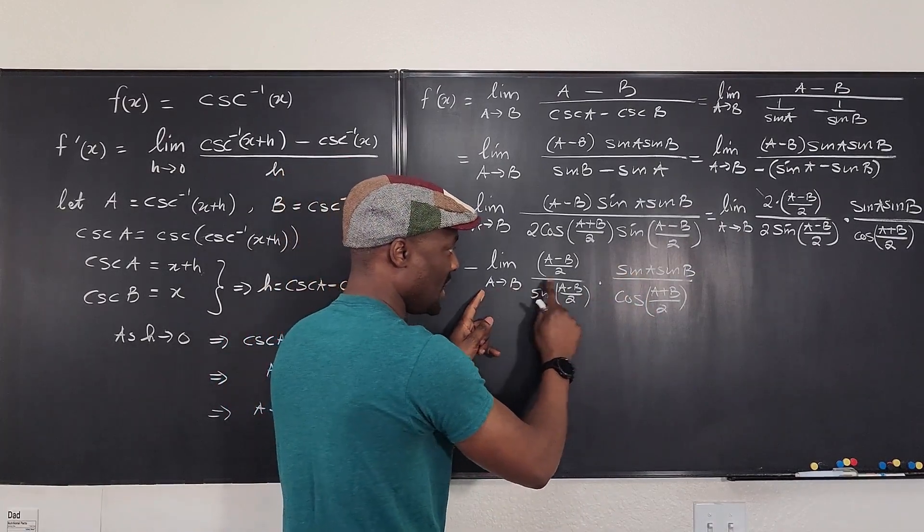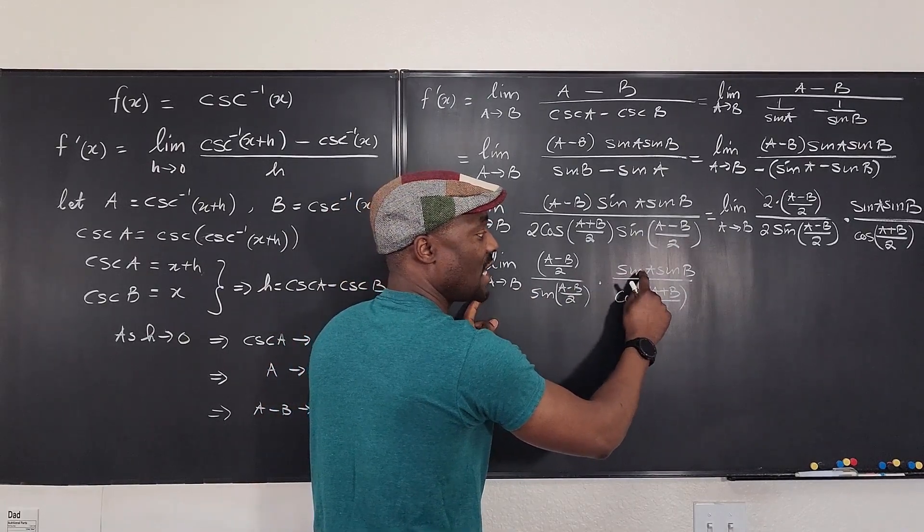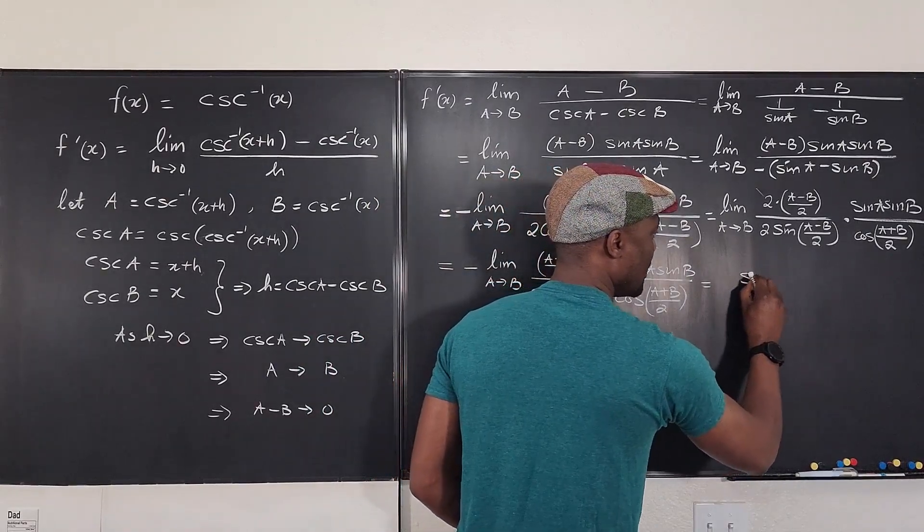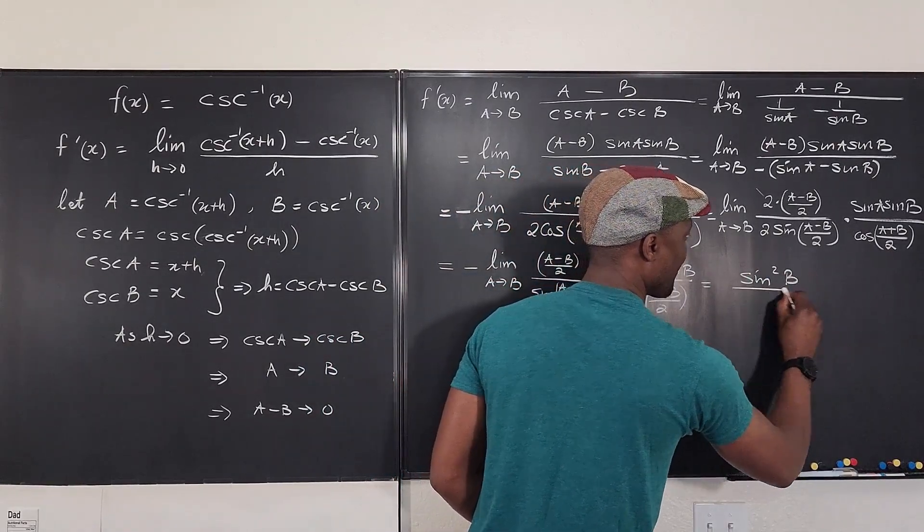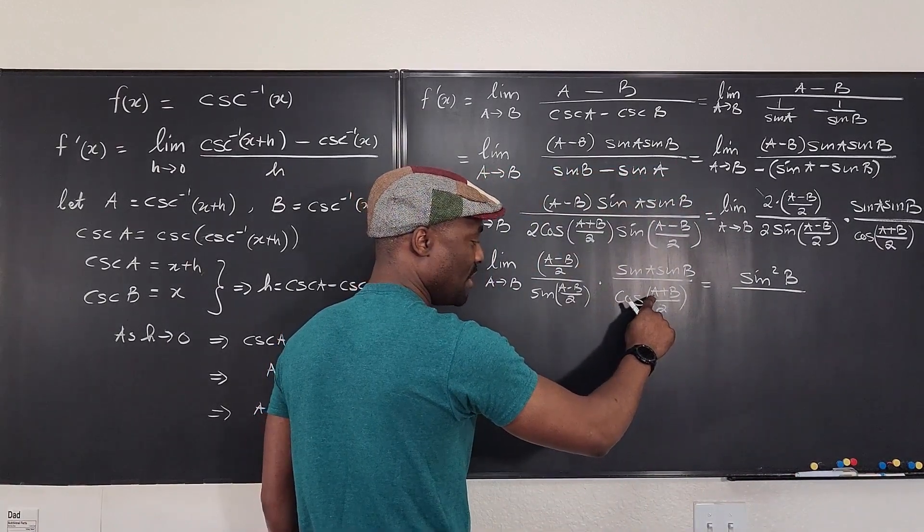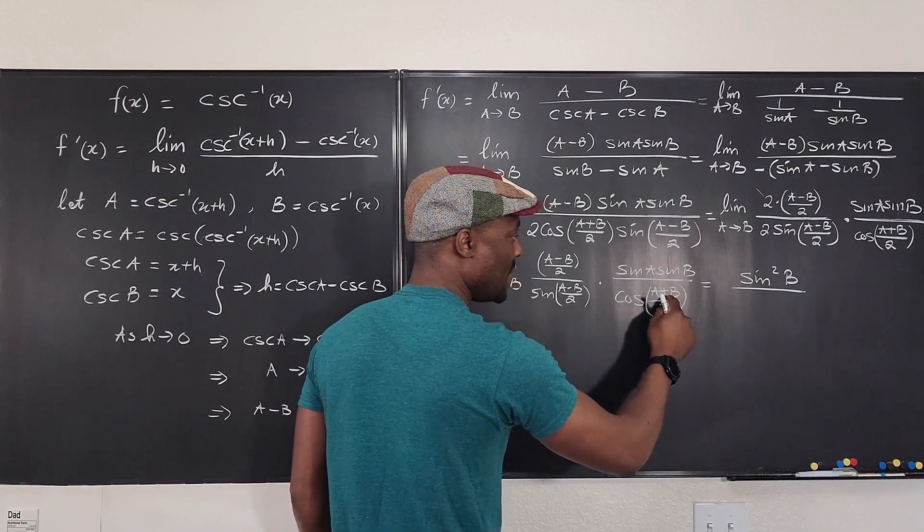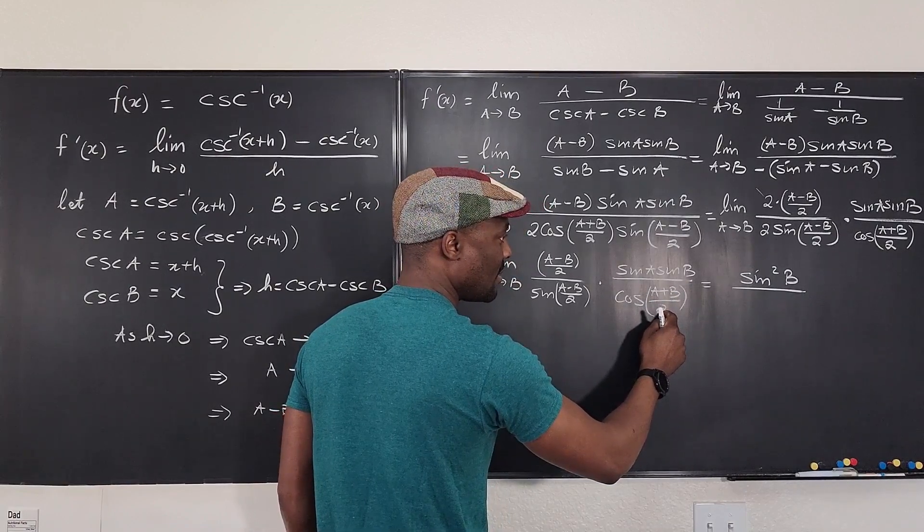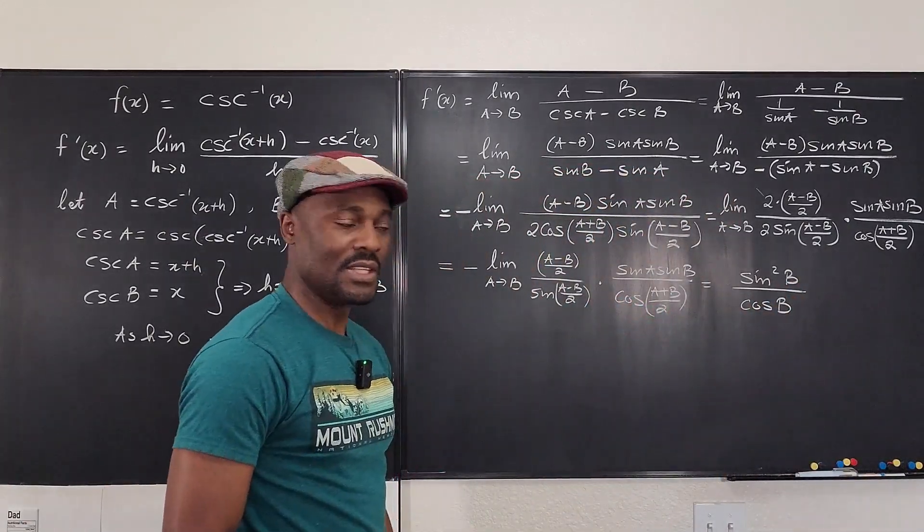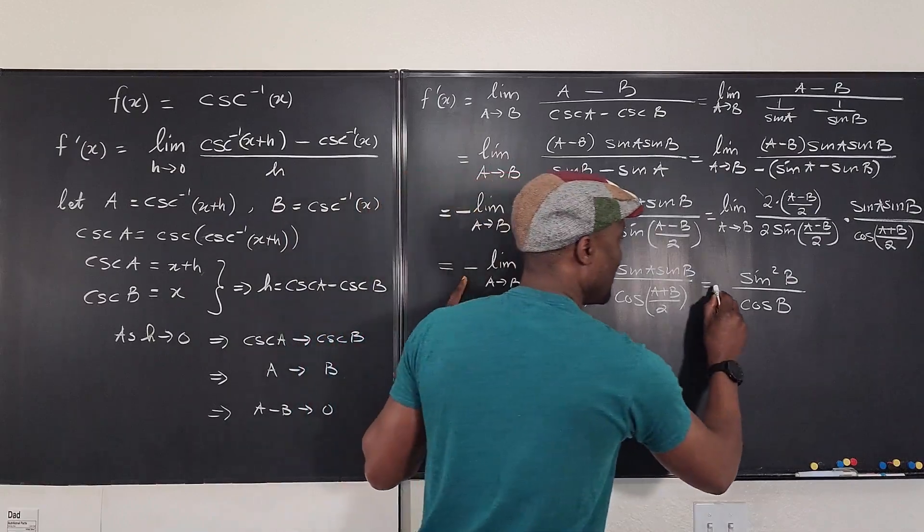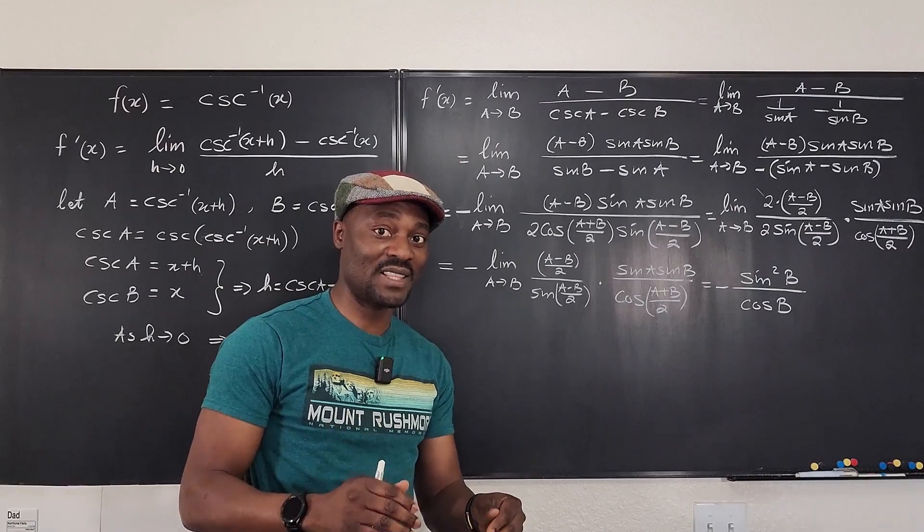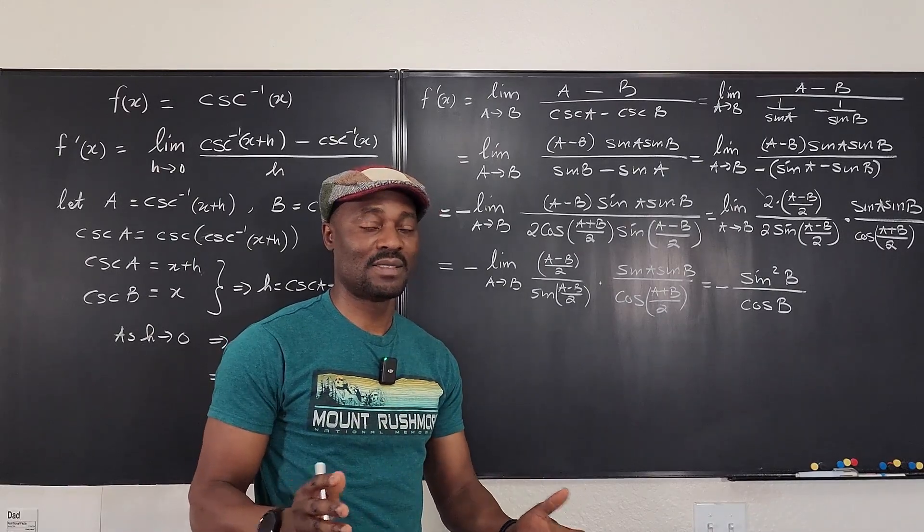And what is left here? If we take the limit of this part as a goes to b, sine a goes to sine b. So this becomes sine b times sine b, which is equal to sine squared b. And this becomes, as a goes to b, a becomes b. What is b plus b is 2b. 2b over 2 is just b. Cosine b. And there's a minus sign. So this is the answer. We just need to write it in terms of x.